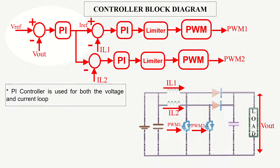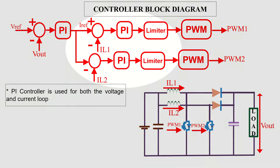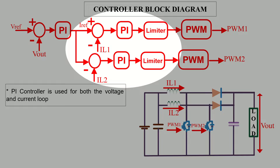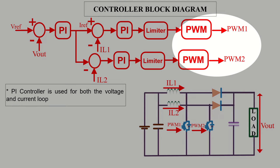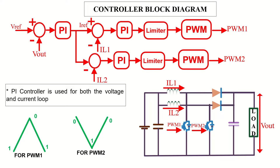This is the controller block diagram. The output voltage is compared with the reference voltage and fed to a PI controller. The output of the PI controller is taken as the current reference. For both inductor currents, we have two separate current control loops, each using a PI controller. The output of each current controller is given to the PWM generation block. For the first PWM, a unit amplitude triangular waveform is used, and for the second PWM, the same triangular signal is used but with a 180-degree phase shift.